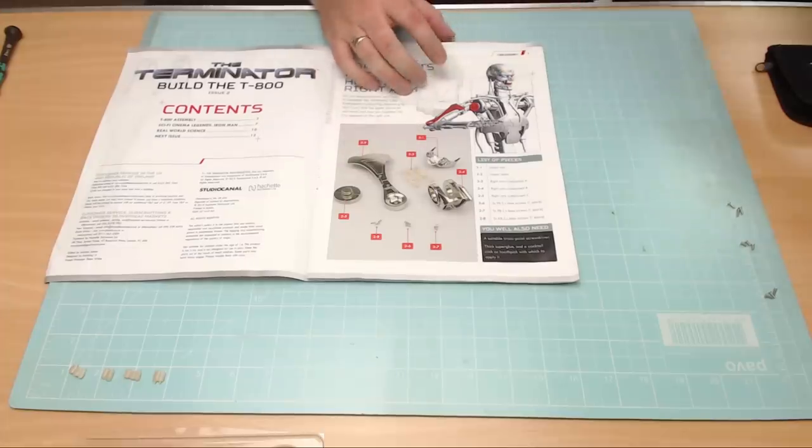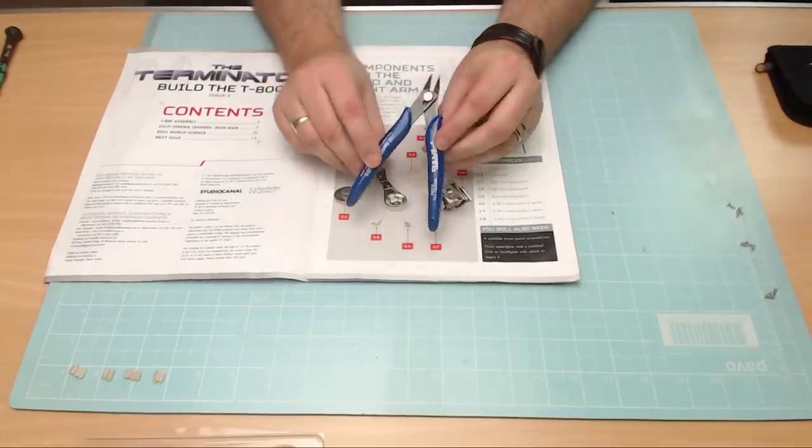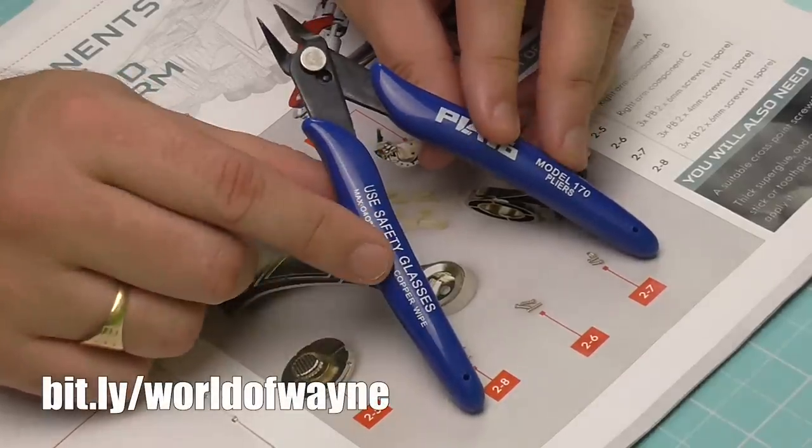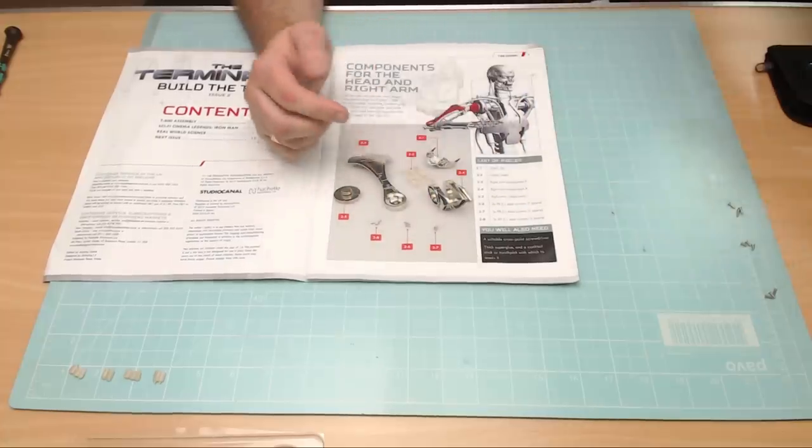When I cut them off the sprue I used my trusty sprue cutter which is available through my Amazon store at bits.ly forward slash world of Wayne. Just click on the Modelers Emporium tab and you'll see them on there, and it enables you to cut them with a nice straight edge.